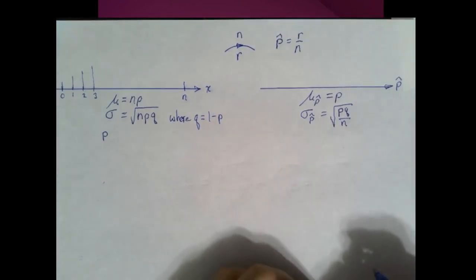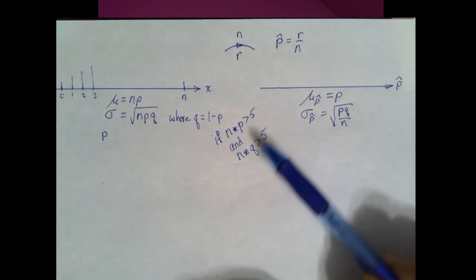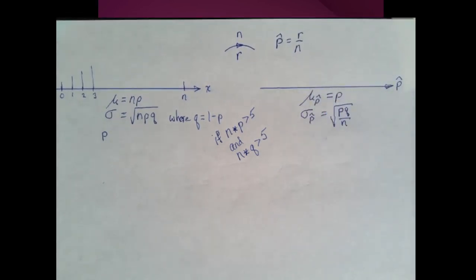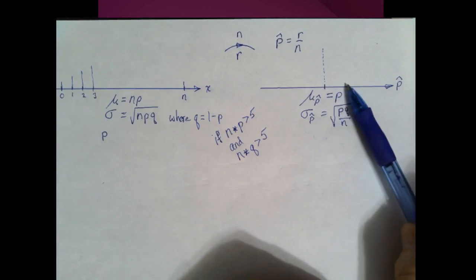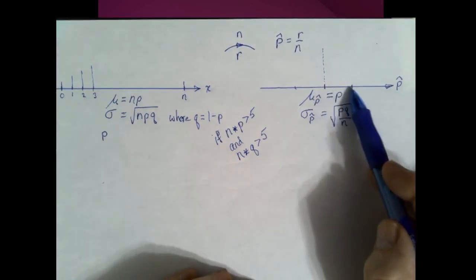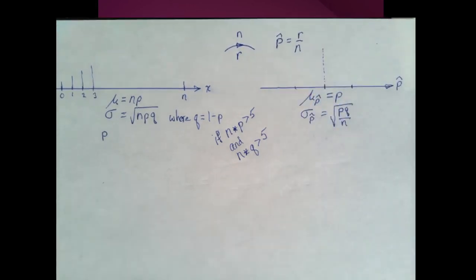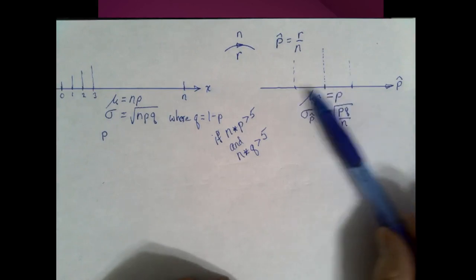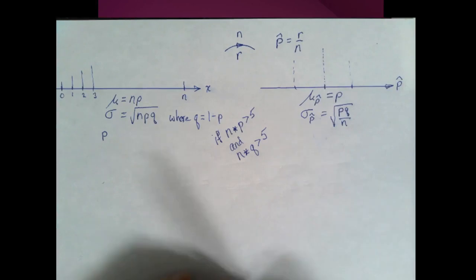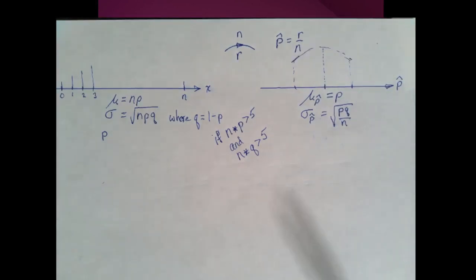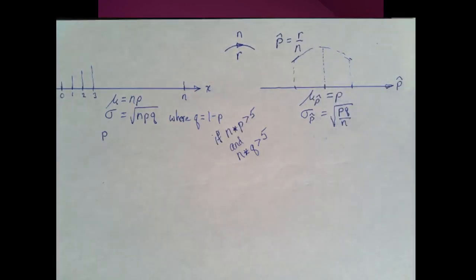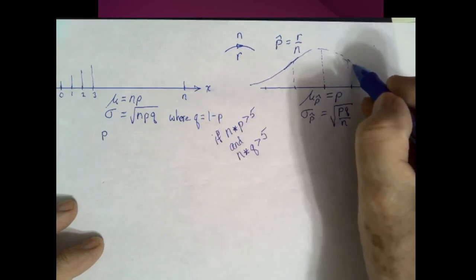The mean of the p-hats is p and the standard deviation of the p-hats is the square root of pq over n. Furthermore, it has been observed that if n times p is greater than 5 and n times q is greater than 5, then this distribution will be approximately normally distributed. The high point is at p, and the distribution is concave down within one standard deviation and concave up outside of that.